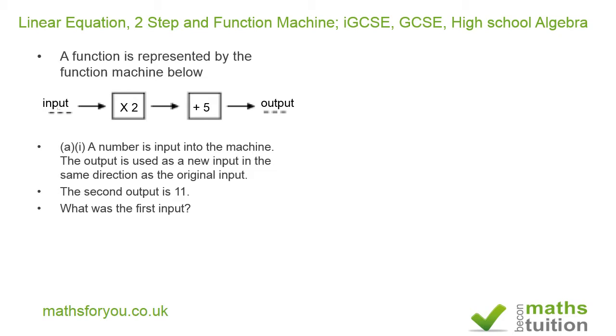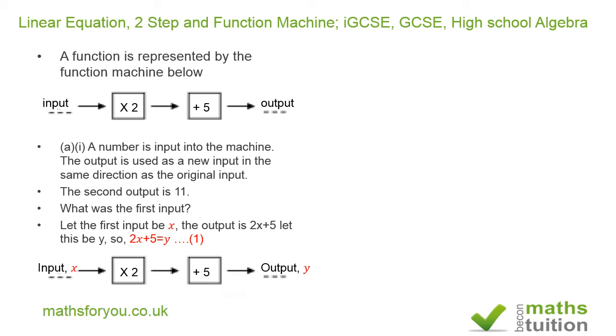Now our function machine, if we say let x be the first input, so we have that 2x plus 5 is the output which is equal to y. So our output is 2x plus 5 and our output is also y. So 2x plus 5 is equal to y.